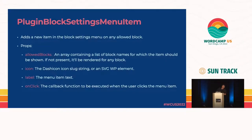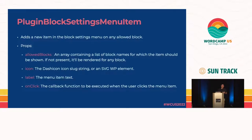Next is PluginBlockSettingsMenuItem. It adds a new item in the block settings menu on any allowed block — this is how you add something to a specific block's context menu. It takes four props: allowedBlocks is an array of blocks this will appear on; if you don't add this, it'll appear across all blocks. There is some logic around selecting multiple blocks — if you have three blocks selected and one isn't in the allowed block list, this will not show up.